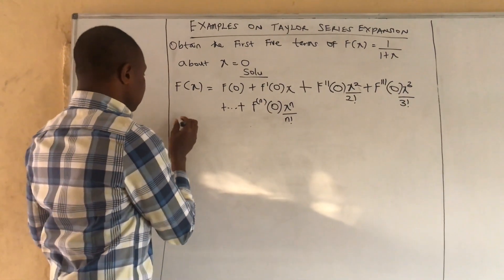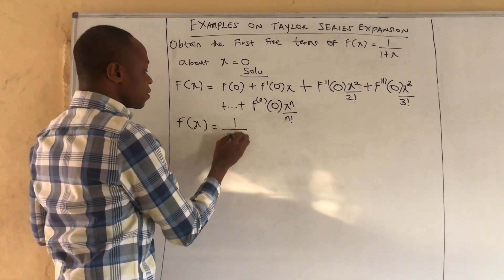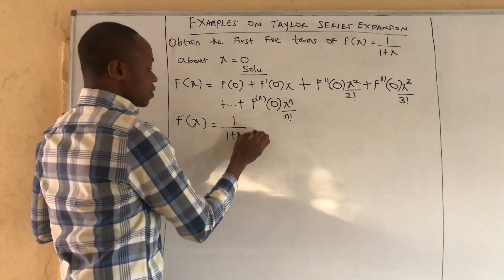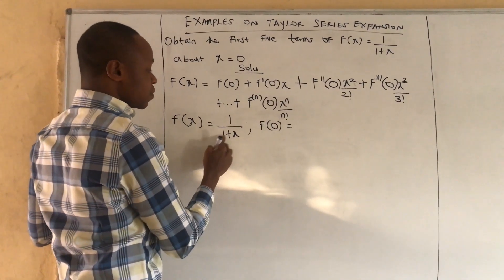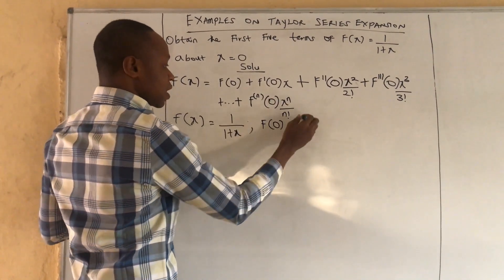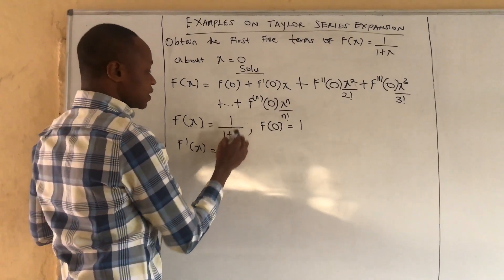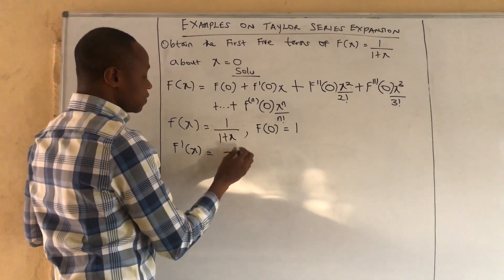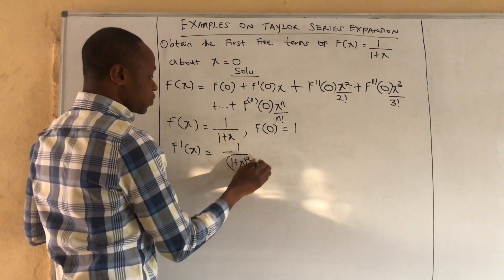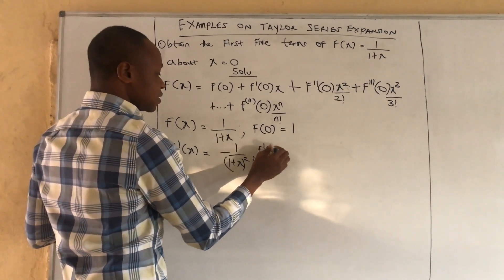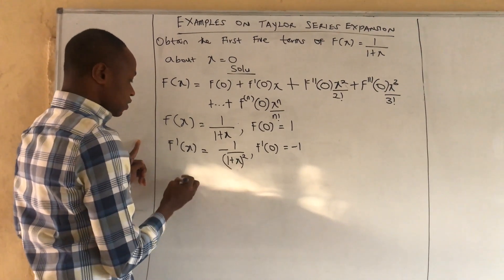We proceed this way: f of x is 1 over 1 plus x. Therefore f of 0 — we substitute 0 — gives 1 over 1 plus 0, which is 1. If we find f prime of x, differentiating with respect to x gives minus 1 over (1 plus x) all squared, such that f prime at 0 gives us minus 1 when you substitute 0 for x.